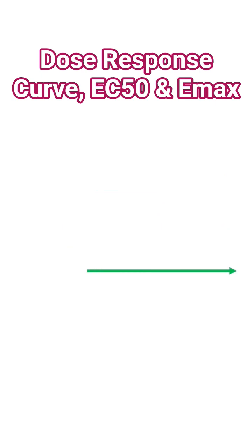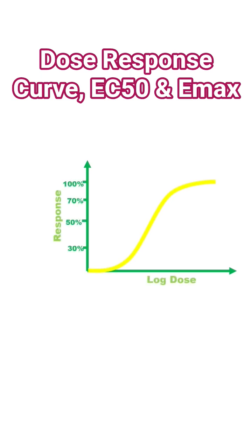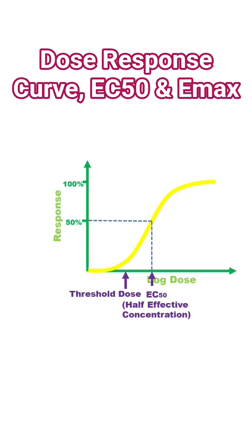Important parameters include the threshold dose — the lowest dose that produces a measurable effect — EC50, the dose that produces 50% of the maximum effect, and Emax.